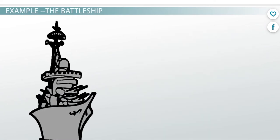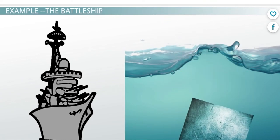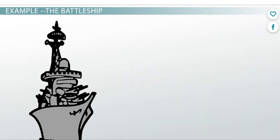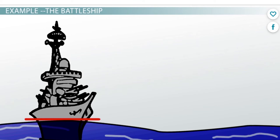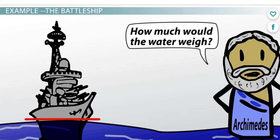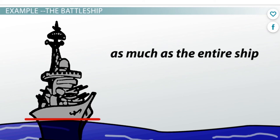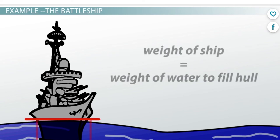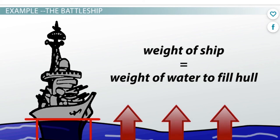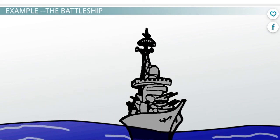Let's use a battleship as an example. A battleship is made of steel — right about now you may be saying, 'but steel doesn't float, so how is it possible?' Look at the image of the battleship and imagine drawing a line where the water comes up on the hull of the ship. Then fill the ship's hull with water up to that line. The water would actually weigh as much as the entire ship. So the water applies a buoyant force up on the ship with this much force — therefore the ship made of steel floats.